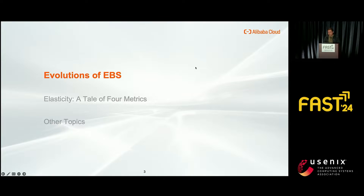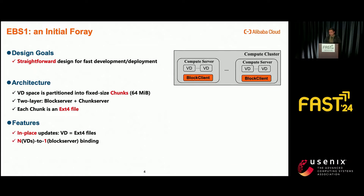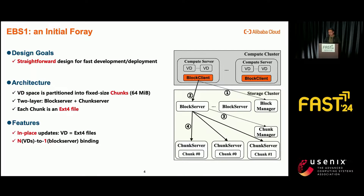Part one: I will introduce three generations of cloud block store at Alibaba. In the first generation, our goal is simple — we use a mature and straightforward design for fast development and deployment. First, we partition a user's virtual disk, namely its logical block address, as a series of fixed-size chunks. Then we set up a two-layer architecture. In the first layer, we use a set of block servers for semantic translation, and identify three chunk servers for three-way replication.